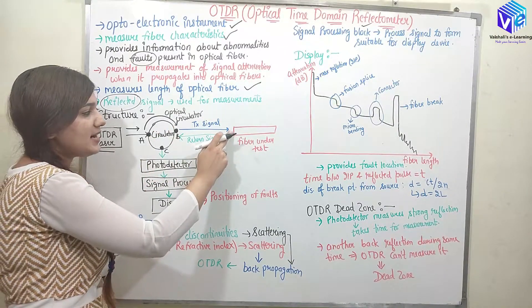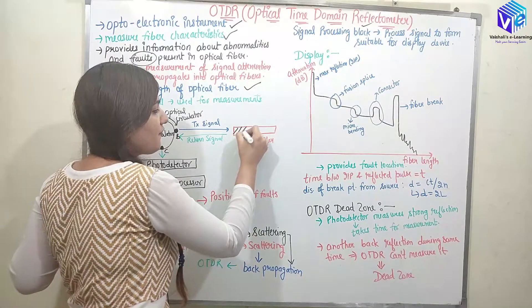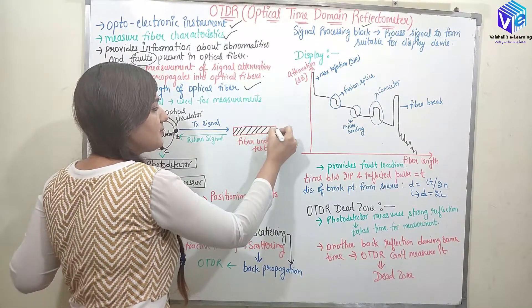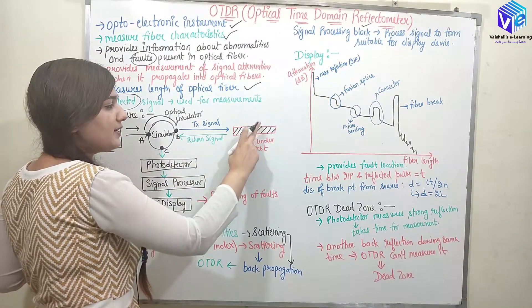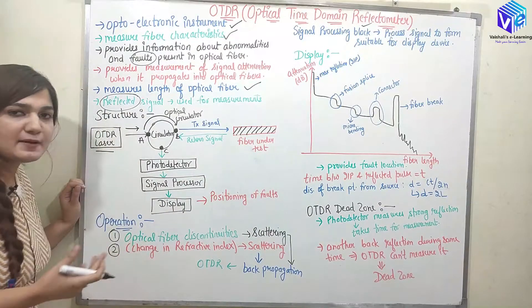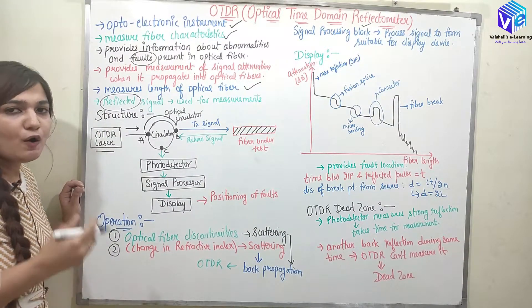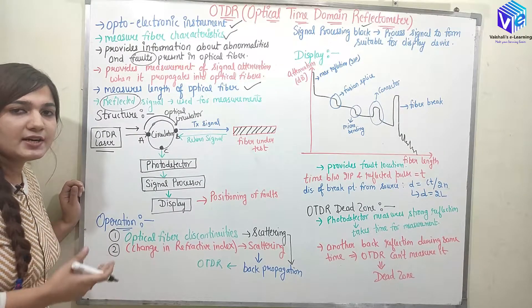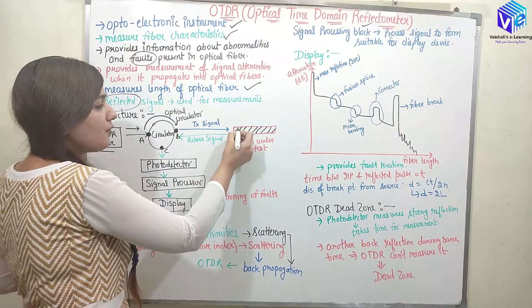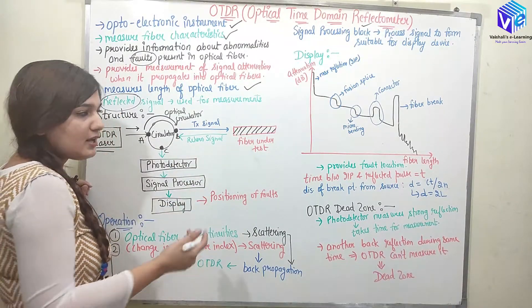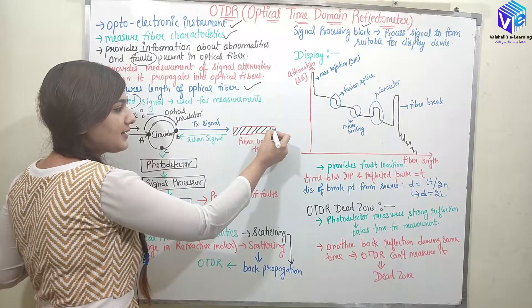The transmitted signal — shown in blue — is sent from terminal B to the fiber under test. In the fiber under test, we have various types of connectors, faults, and signal degradation due to attenuation. When scattering or a fault occurs, the light signal is scattered backward.